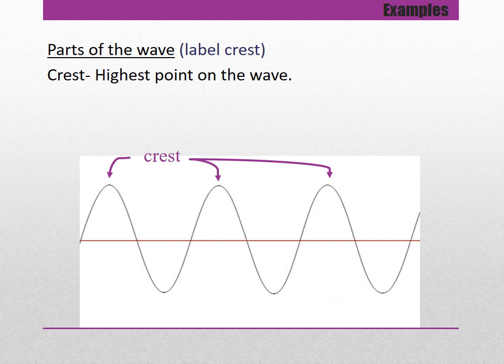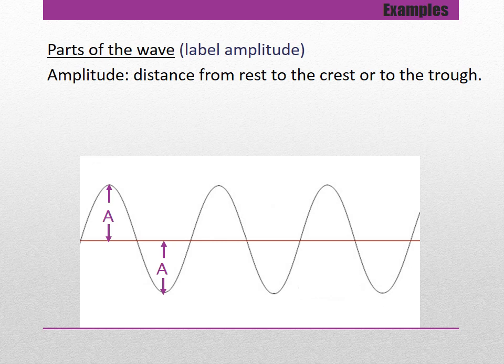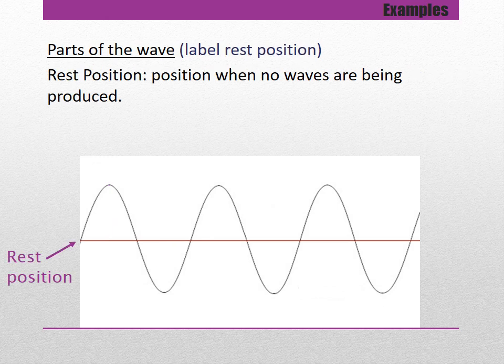Make sure you have your booklet and label the parts of the wave. The highest points of the wave are called the crest. The lowest points are called troughs. The distance from crest to rest position or from rest position to trough is called the amplitude. The line down the middle is the rest position — if you stopped shaking a slinky, it would sit along that flat rest position line.